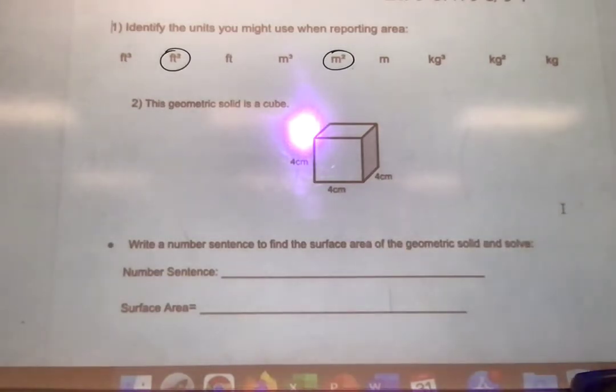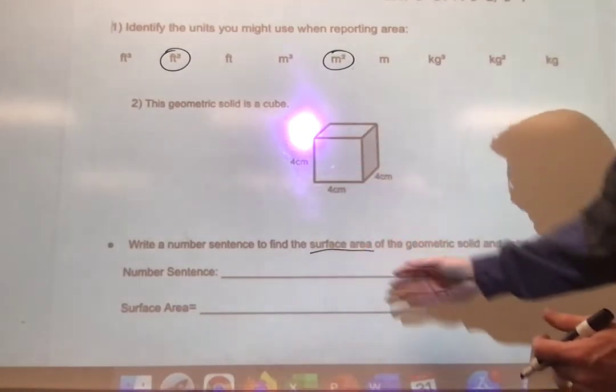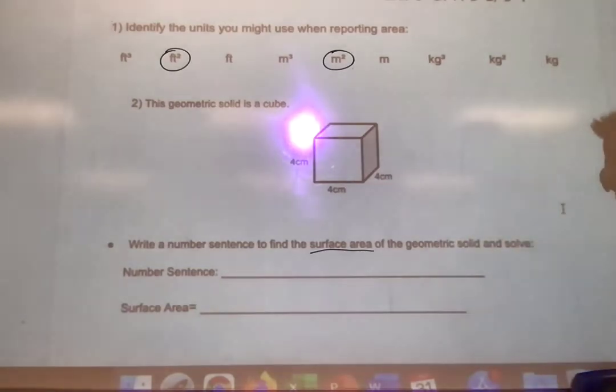Right here we've got a geometric solid, it's a cube, it's 4 by 4 by 4. Our job now is to find the surface area. Write a number sentence to find that surface area of the geometric solid and then let's go ahead and solve it. So the number sentence here - a lot of people will get surface area and volume mixed up. Remember, surface area guys, we're trying to cover the surface of all six faces. We're not talking about how much it holds here, that's volume.